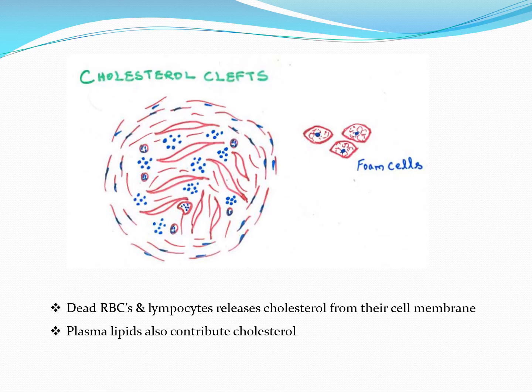These spindle-shaped spaces are called cholesterol clefts. The cholesterol material gets washed off during slide processing, and the spaces it occupied appear as spindle-shaped areas. Originally in the patient, these are cholesterol crystals. Cholesterol accumulates here during inflammation because blood vessels become leaky, releasing cholesterol. Additionally, dead RBCs and lymphocytes release cholesterol from their cell membranes, which accumulates in the connective tissue.